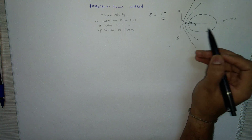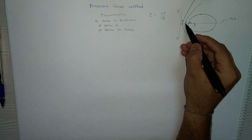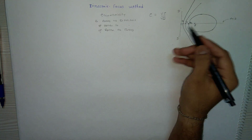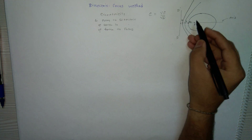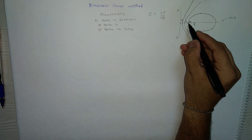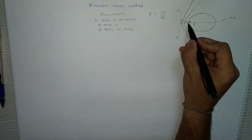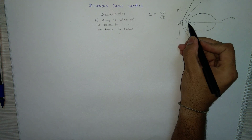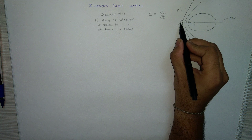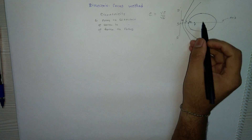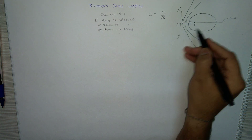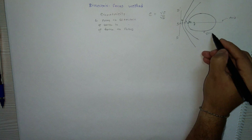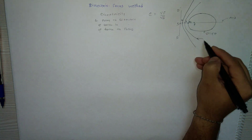The vertex is the intersection point of the curve and the axis. Eccentricity is the ratio of the distance from vertex to focus divided by vertex to directrix.